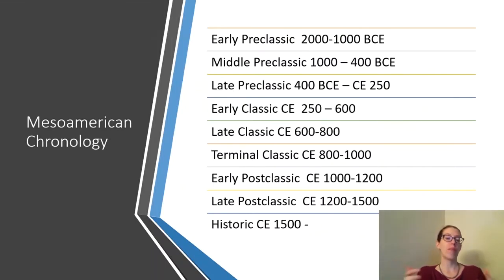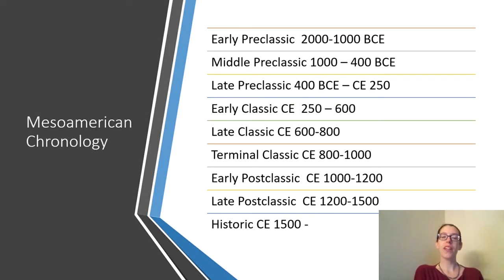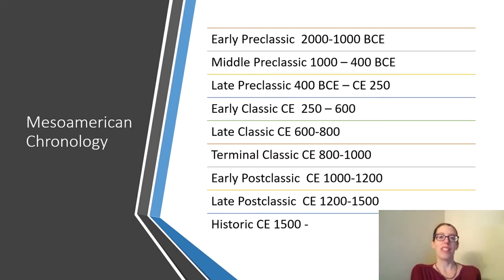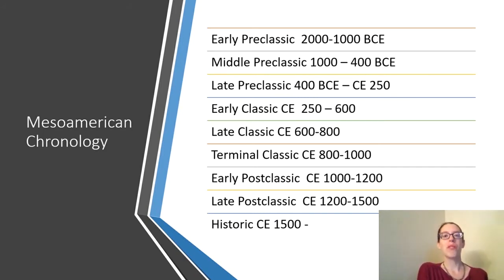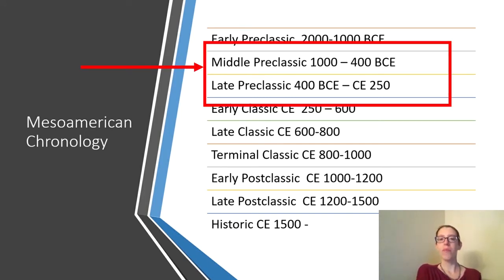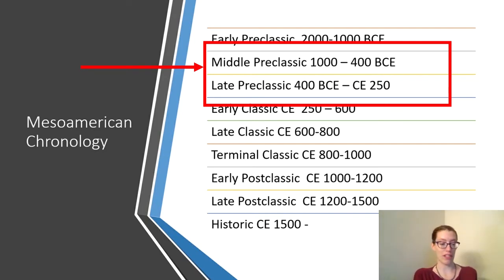The chronology of the Maya region is very lengthy and rather extensive, but today with our discussion of early agriculture settlements as well as the origins of states and cities, we'll be talking mostly about the pre-classic time period — both the middle and late pre-classic — between about 1000 BCE and CE 250.